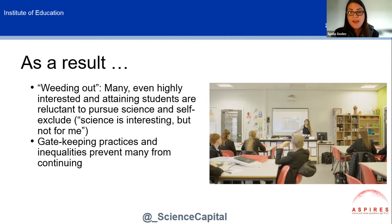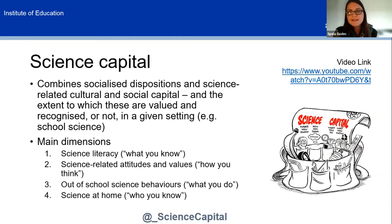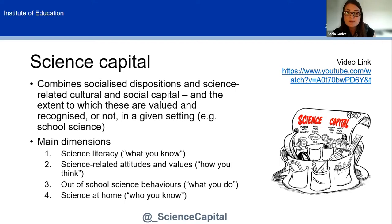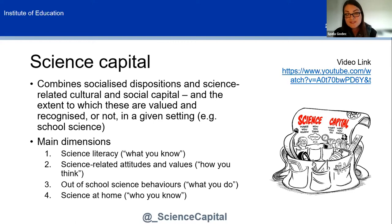There are many factors shaping participation. The one I want to highlight is science capital, which is an umbrella term we developed to capture dispositions and science-related cultural and social capital. Drawing on the work of sociologists, it also importantly captures the extent to which young people's resources tend to be recognized within a mainstream science classroom. The main dimensions of science capital include science literacy — what you know — science attitudes and values, how you think, and out-of-school science behaviors such as watching science TV and informal STEM learning activities.